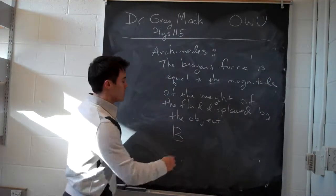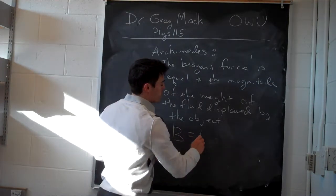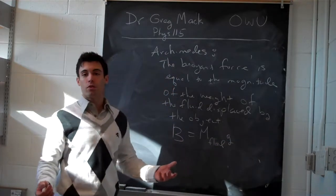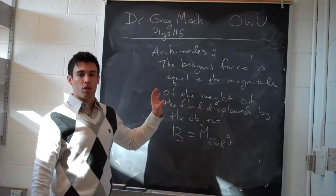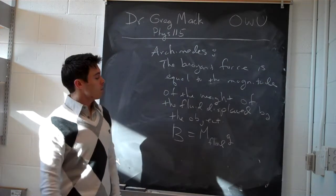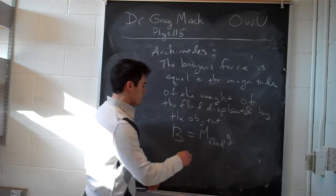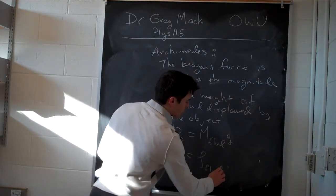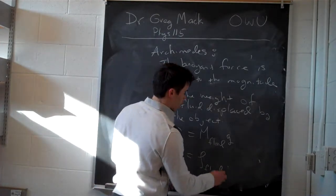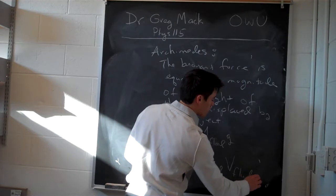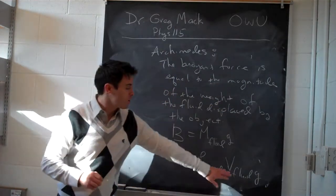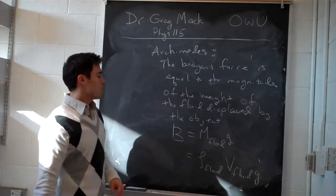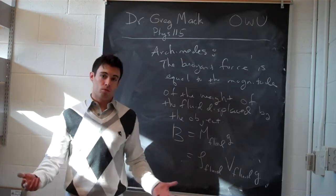So B, the buoyant force, is equal to the mass of the fluid displaced times gravity. In thinking about a liquid, one of the most important things to consider is the density and volume. So we replace mass with density: B is equal to the density of the fluid — lowercase rho — times the volume of the fluid times g, the acceleration due to gravity. That is the buoyant force any object would experience.